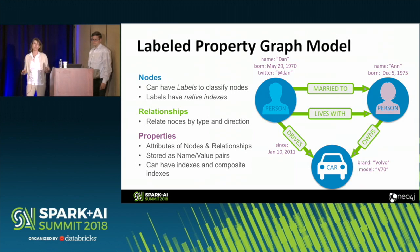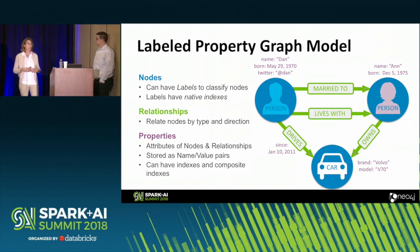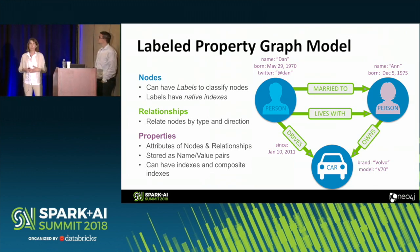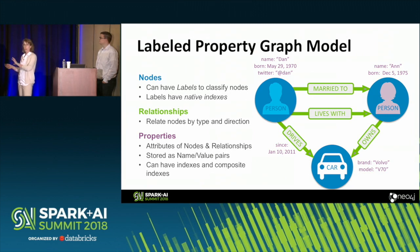Then we have properties on each one of those, and this is what makes it a property graph model. You might have a person — what's their name, how tall are they, when were they born, where do they live? And for a car, what's the brand, what model was it made? This gives you attributes for both your nodes and your relationships, and you can store them together. You can also have indexes. That's a high-level overview of a property graph.